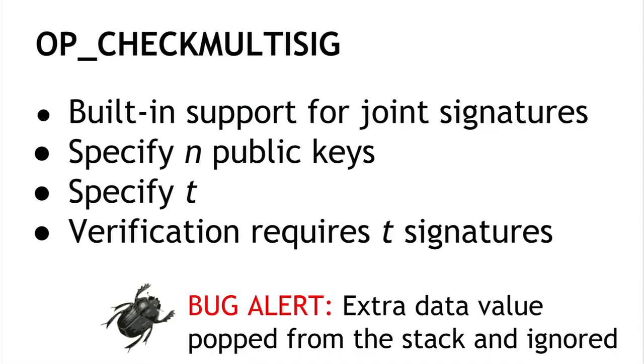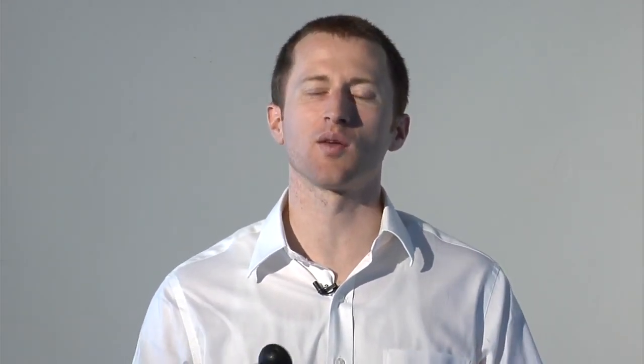There's an important bug — a gotcha that's been there since the beginning: the OP_CHECKMULTISIG instruction actually pops an extra data value off the stack and ignores it. This is just a quirk of the Bitcoin language that you have to deal with by putting an extra dummy variable onto the stack. At this point it's considered a feature in Bitcoin — it's not going away because the costs of removing it are much higher than the damage it causes.